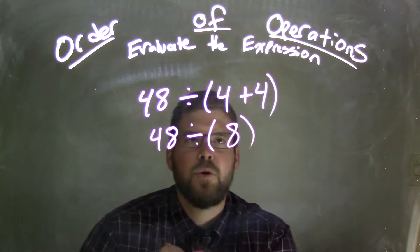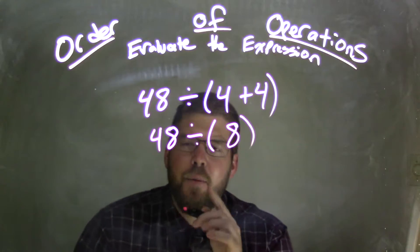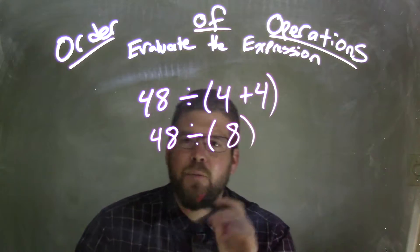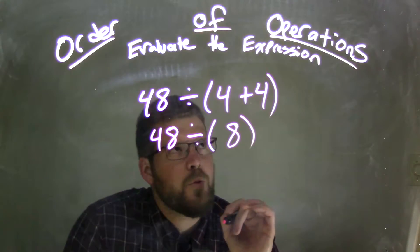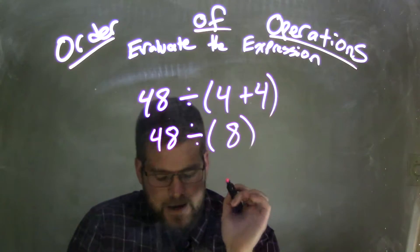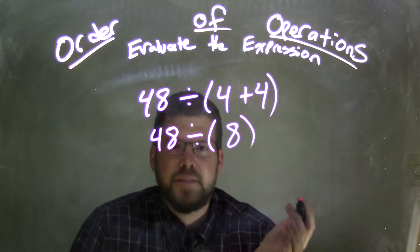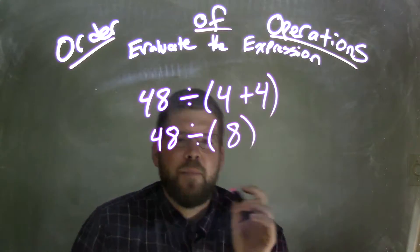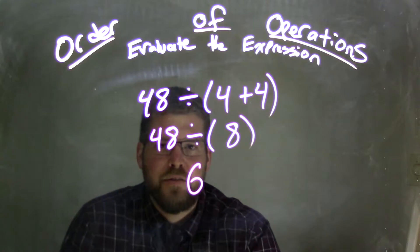So now we have 4 plus 4, which became an 8. Now we have 48 divided by 8. Well, 48 divided by 8, what is 48 divided by 8? 8 times 1 gives me 48, 8 times 1 is 48, we need 6, right? So 48 divided by 8 is 6, and there's our final answer.